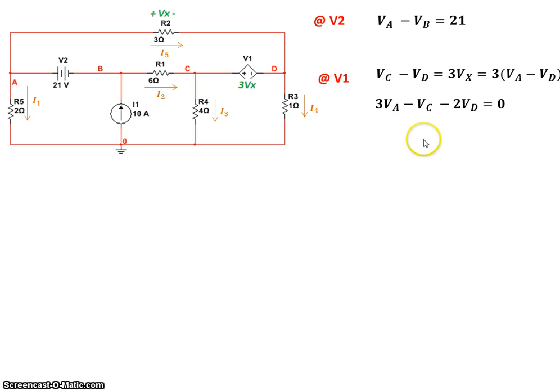So we have two equations so far. Now let's apply supernode 1. On supernode 1 and supernode 2, we're going to use KCL.